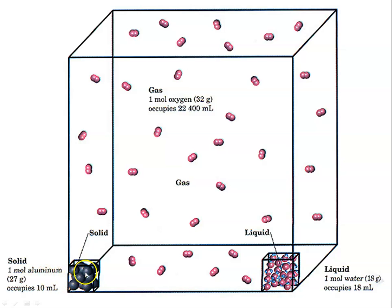One mole of aluminum, which has a mass of 27 grams, only occupies 10 milliliters. One mole of water is 18 milliliters. So 10 milliliters and 18 milliliters are pretty small compared to 22,000 milliliters. The object of this slide is to show you that gas particles are far apart.